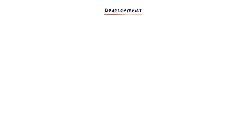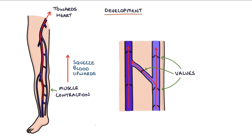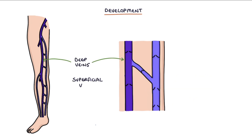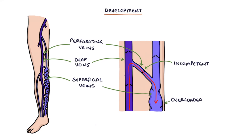Veins contain valves that only allow blood to flow in one direction, towards the heart. In the legs, as the muscles contract, they squeeze blood upwards against gravity. The valves prevent gravity from pulling the blood back down into the feet. When the valves become incompetent, the blood is drawn downwards by gravity and pools in the veins and the feet. The deep and superficial veins are connected by vessels called perforating veins or perforators, which allow blood to flow from the superficial veins to the deep veins but not the other way around. When the valves are incompetent in these perforators, blood flows from the deep veins back into the superficial veins and overloads them, leading to dilatation and engorgement of the superficial veins, forming varicose veins.